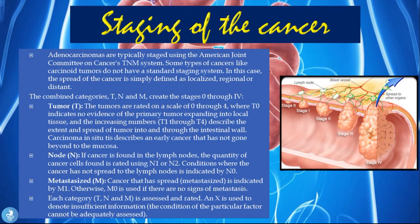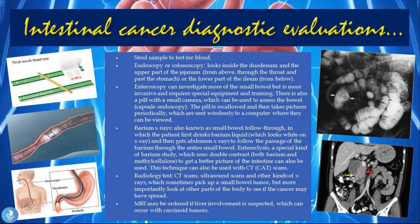Carcinoma in situ (Tis) describes early cancer that has not gone beyond the mucosa. N, or node: if cancer is found in the lymph nodes, the quantity is rated as N1 or N2. N0 indicates no lymph node spread. M indicates metastasis: M1 means cancer has spread, while M0 means no signs of metastasis. X is used to denote insufficient information when a particular factor cannot be adequately assessed.